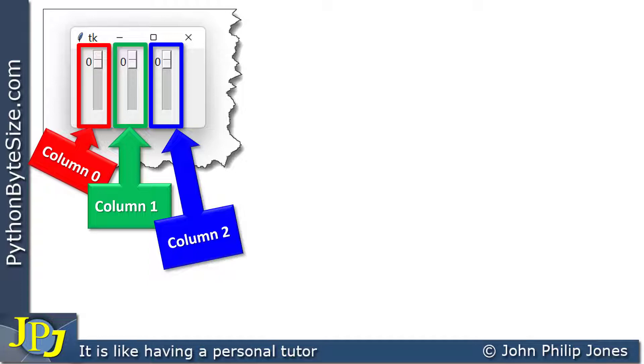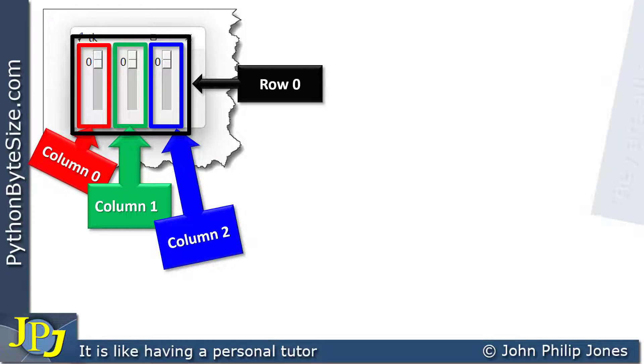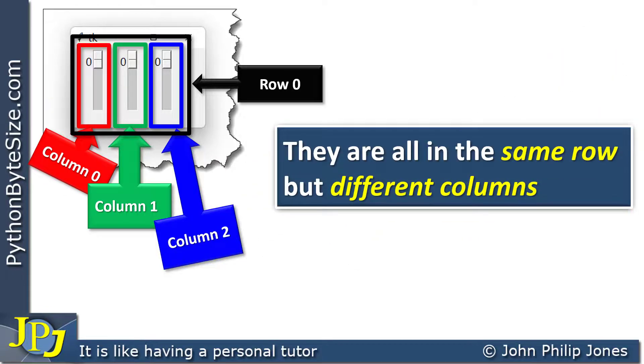So we can see each of the widgets are in a different column but they're all in the same row. We can summarize this by saying they are all in the same row but different columns and that will feed into our code.